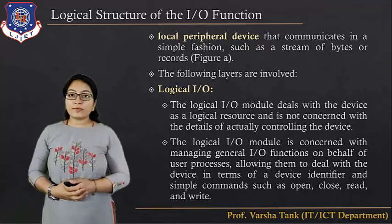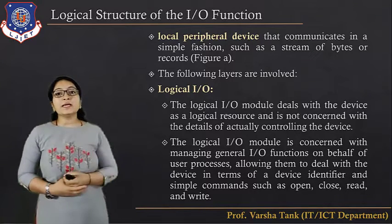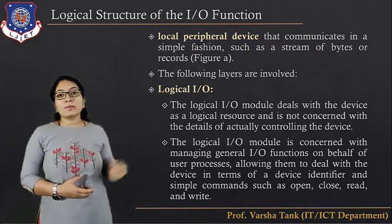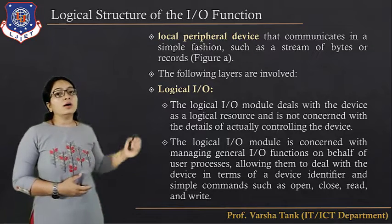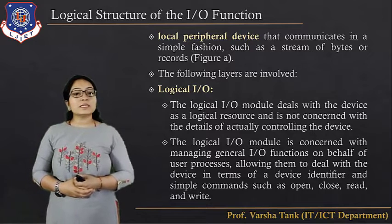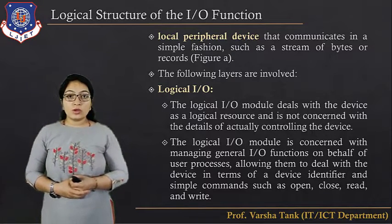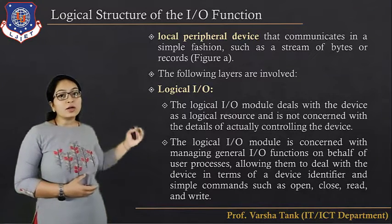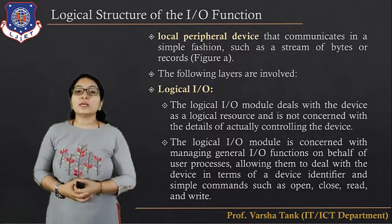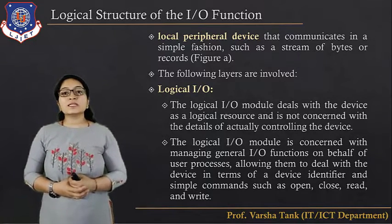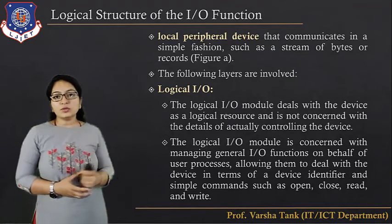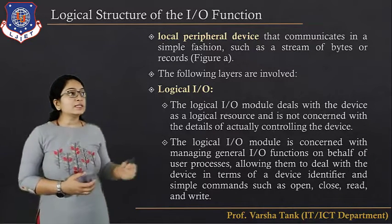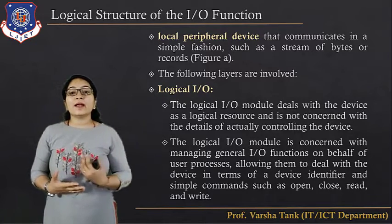The local peripheral device communicates in a simple fashion, such as a stream of bytes or records. The first layer is the logical IO. The logical IO module deals with the device as a logical resource and is not concerned with the details of actually controlling the device. It manages general IO functions on behalf of user programs, allowing them to deal with devices using identifiers and simple commands such as open, close, read, and write.